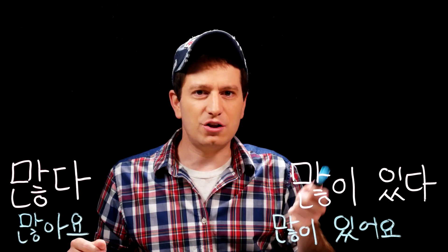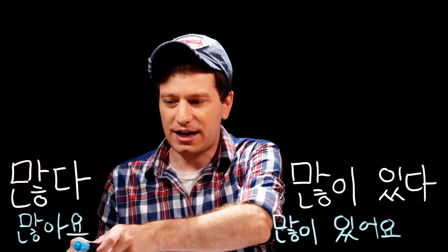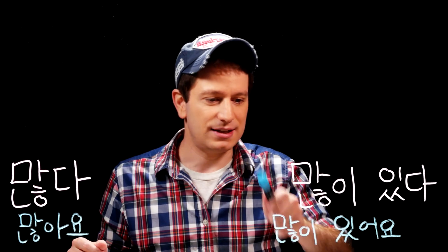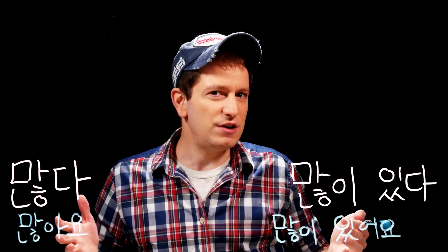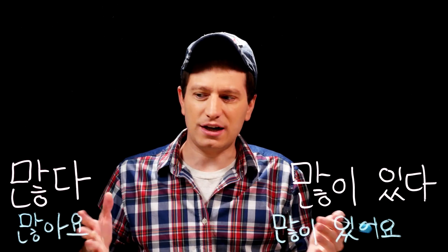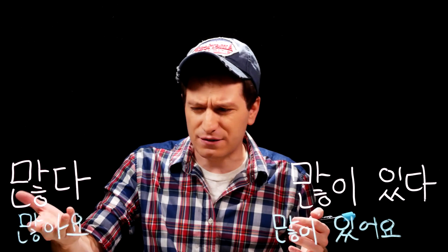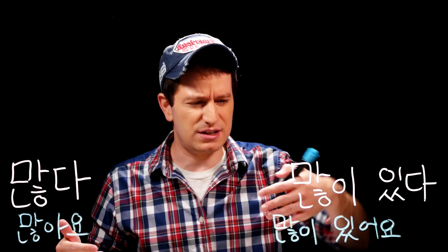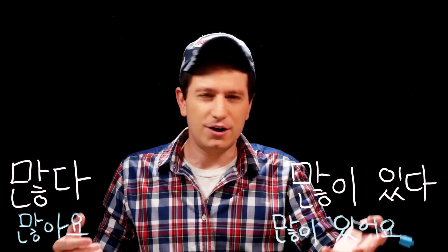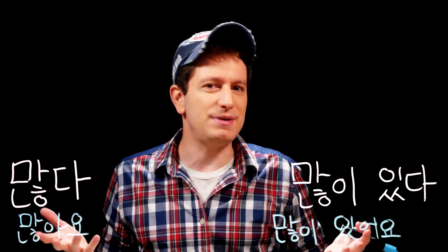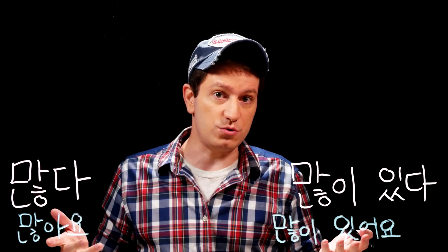Let's take a look at two examples: 많아요 and 많이 있어요. In this video we're going to be talking about how saying 'there are a lot of something' versus 'there exists a lot of something' could possibly be different and which one you might want to use.